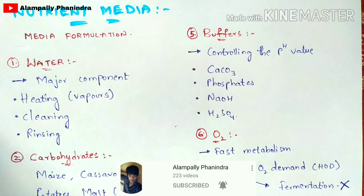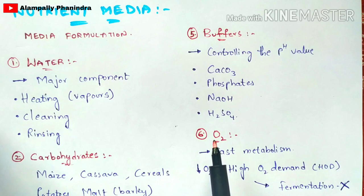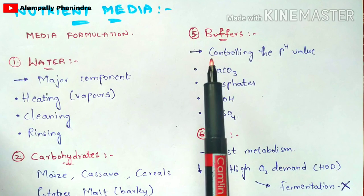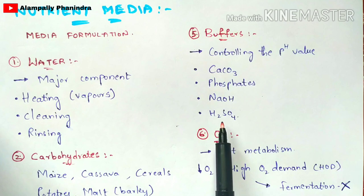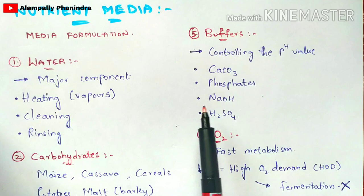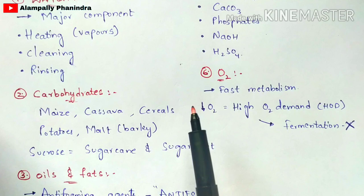The fifth component is buffers. Buffers are used to control the pH value. As mentioned earlier, a pH controller can control pH externally, and internally the nutrient medium added in buffer form also controls pH. Buffers used in the nutrient medium include calcium carbonate, phosphates, sodium hydroxide, and sulfuric acid (H₂SO₄).